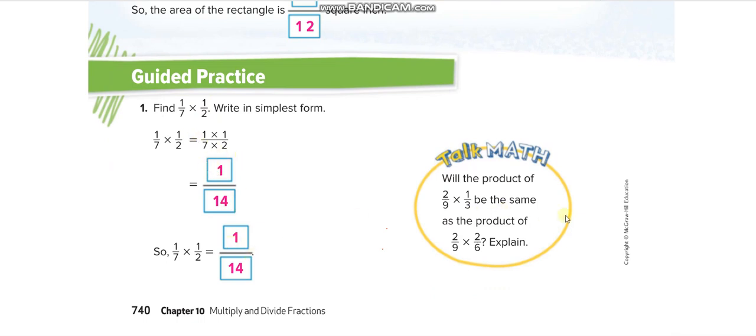Very simple: 1 times 1 is 1, 7 times 2 is 14. We cannot simplify. Let's try this discussion here. They are saying, will the product of 2 over 9 times 1 over 3 be the same as the product of 2 over 9 times 2 over 6? Let us see.